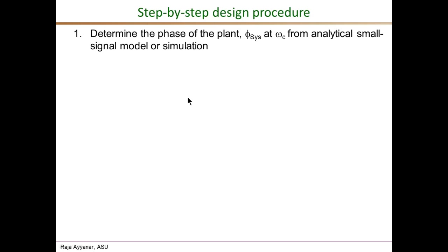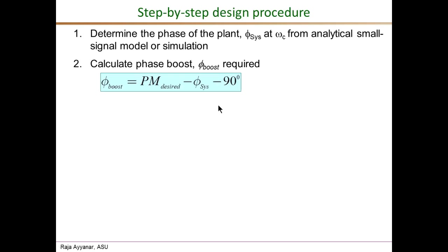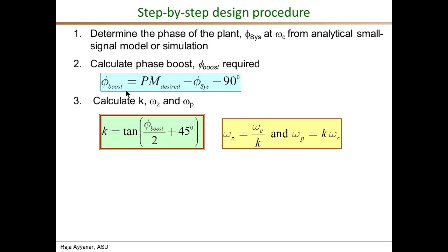The step-by-step design method for Type 2 is as follows. Step 1: determine the phase of the plant, phi_system, at the required crossover frequency omega_c — obtained from the analytical transfer function or from simulation. Step 2: use phi_system to calculate the required phase boost using the phase boost equation, where PM is the desired phase margin (e.g., 60 degrees). Based on the required boost, select the controller type: more than 90 degrees requires Type 3; 0 to 90 degrees uses Type 2.